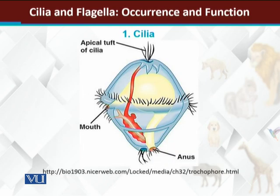The second diagram shows a trochophore larva — an annelid larva. These are different positions where cilia are found. The purpose of this larva is aquatic, meaning it lives in water.